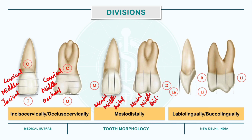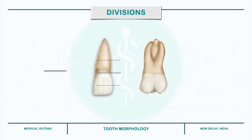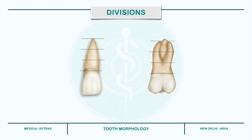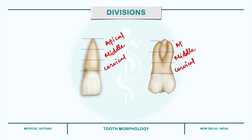In the labiolingual direction, the division is labial, middle, and lingual thirds in the case of anterior teeth, and buccal, middle, and lingual thirds in the case of posterior teeth. The root, on the other hand, is divided into cervical, middle, and apical thirds in both anterior and posterior teeth.